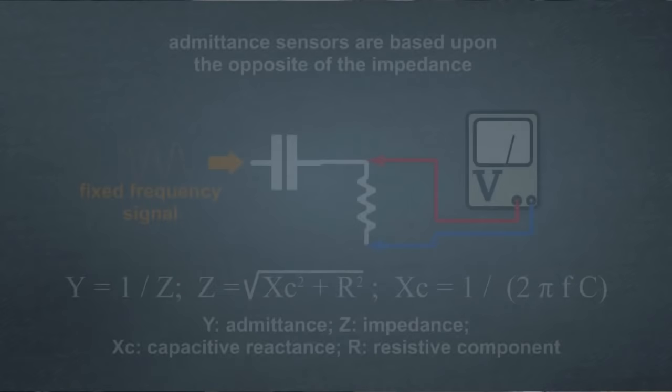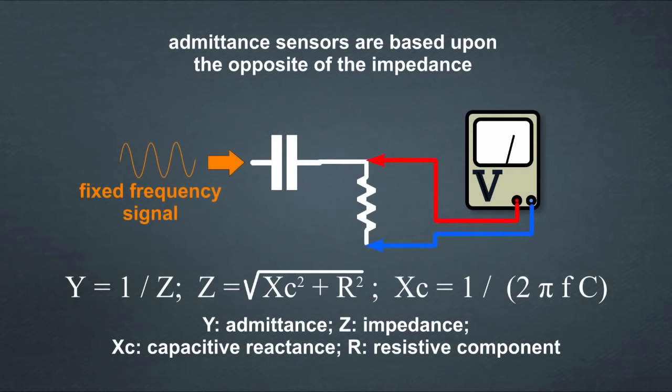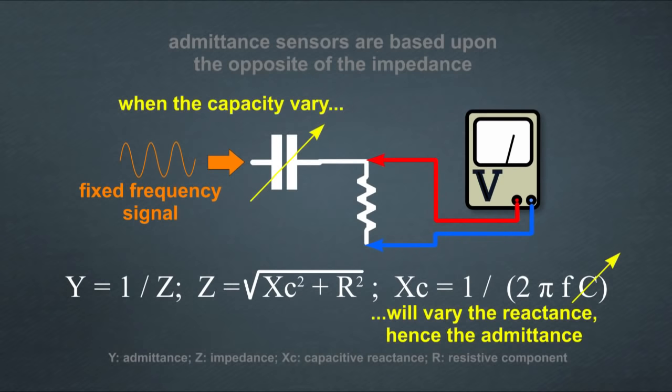The only difference is in the circuits that, instead of measuring the capacitance, send a fixed frequency alternating signal detecting the variation of impedance, since the impedance of a capacitor is given by its capacitance at a given frequency.